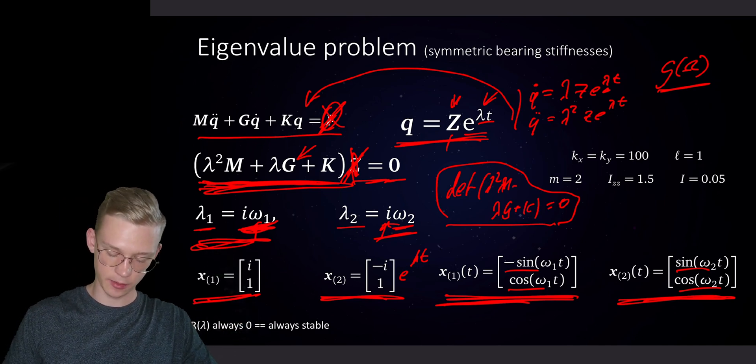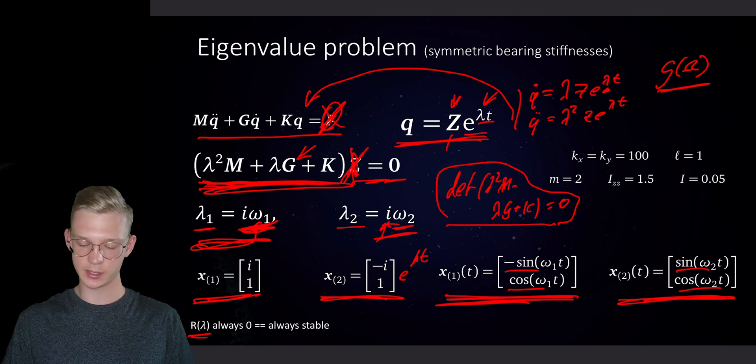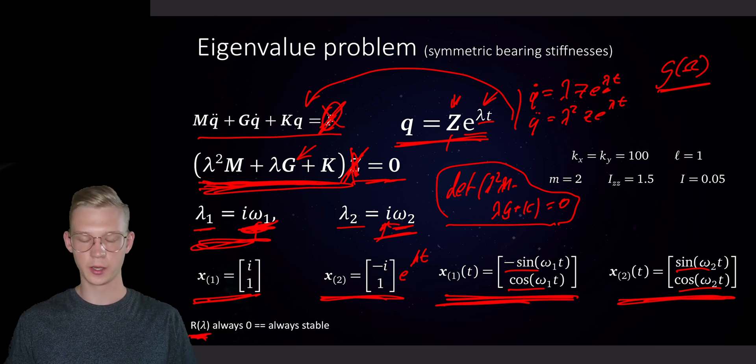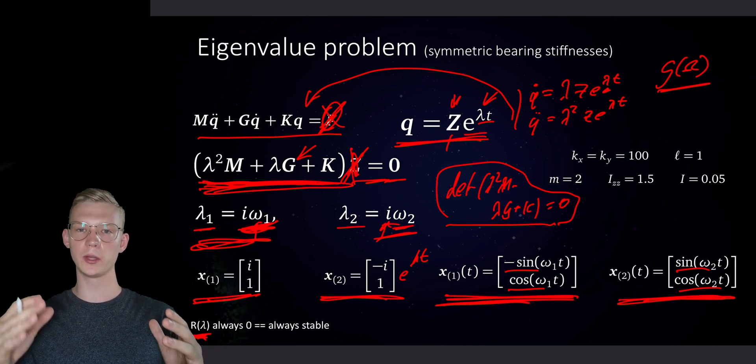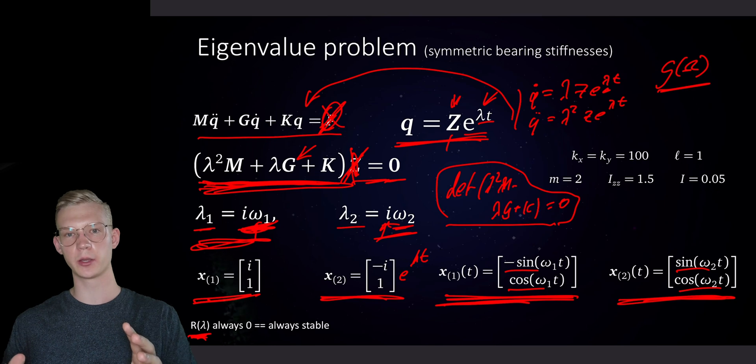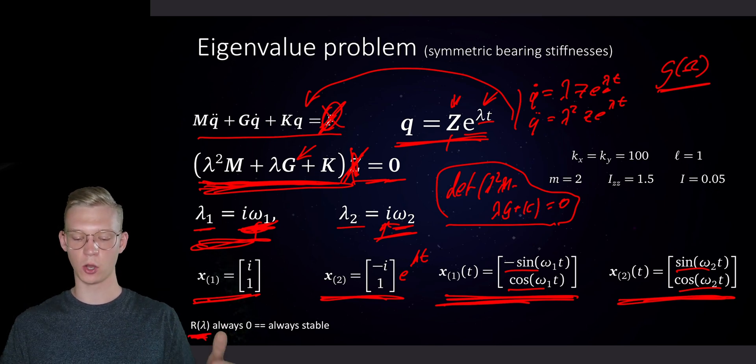And the another important part is that the solution, when we talk about the determinant is equal to zero, the real part is always zero. And we know that if the real part is zero, we only have the imaginary part, we will only have an oscillation. So our system is always stable.